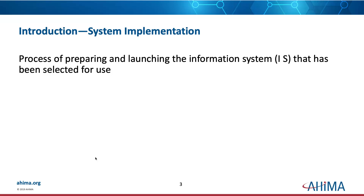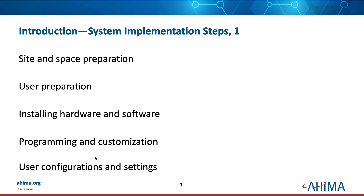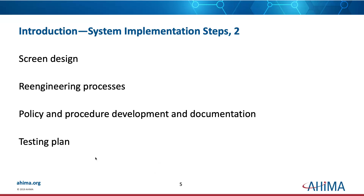What is System Implementation? It is the process of preparing and launching the information system that has been selected for use. You have to look at site and space preparation, user preparation, installing the hardware and software you're going to need, programming and customizations, user configurations and settings. It includes screen design, re-engineering processes, policy and procedure development and documentation, as well as a testing plan.